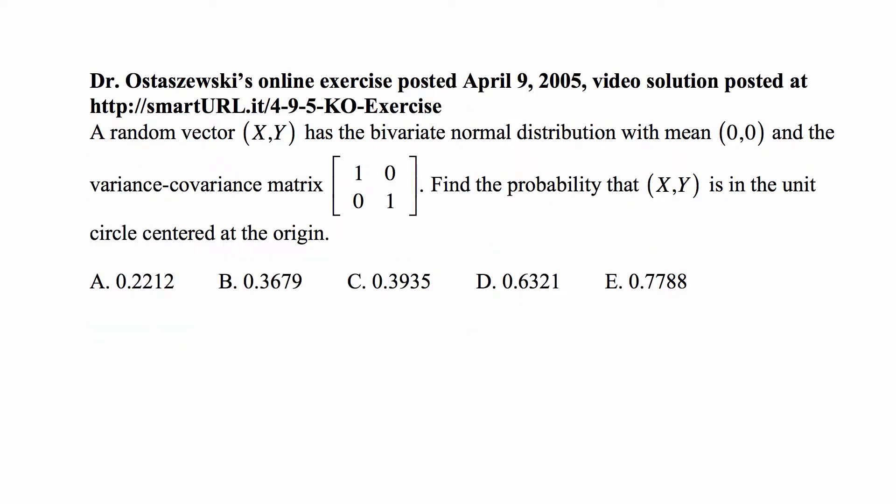Here's the problem. We have a random vector XY, known to have the bivariate normal distribution with mean (0,0) and the variance-covariance matrix of [[1,0],[0,1]]. Find the probability that XY is in the unit circle centered at the origin.